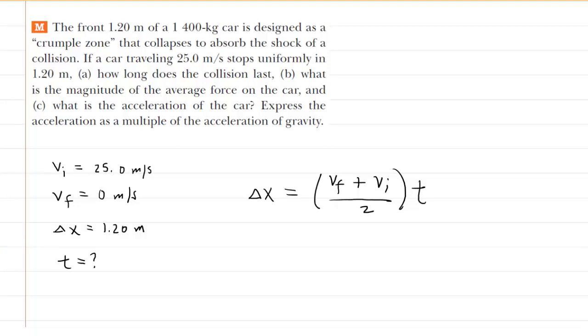In this question we are given a number of kinematics values. For example, it says the car is initially traveling at 25 meters per second, so we have plugged that in for the initial velocity. It then stops, which gives us a final velocity of zero. And it stops in a distance of 1.2 meters.